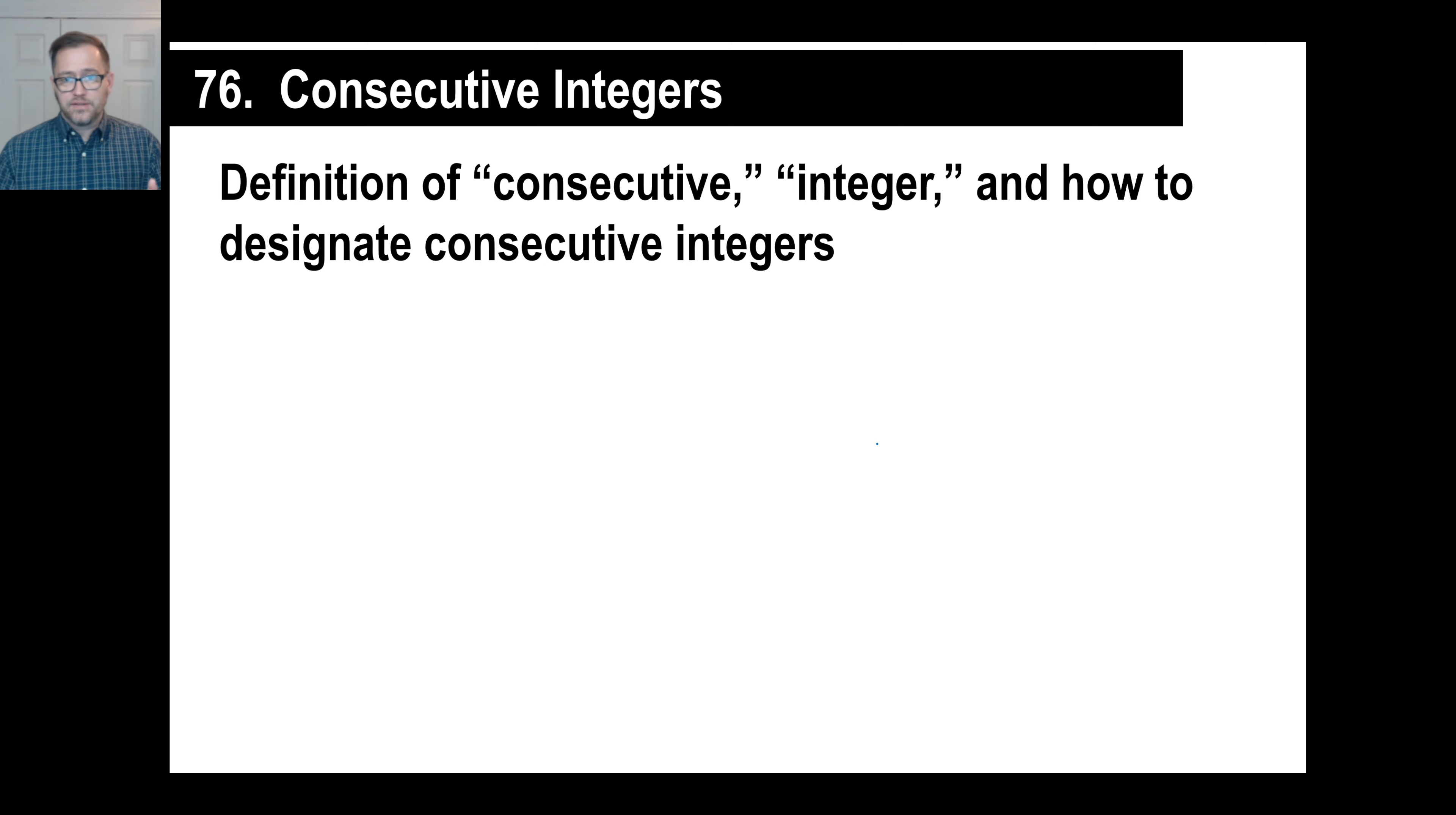How we designate consecutive integers? Well, let's just say they say find three consecutive integers that blah, blah, blah, whatever. Well, if you don't know what something is in algebra, you just call it x or n or whatever you want. A consecutive integer, let's pretend like it's 7, 8, and 9.